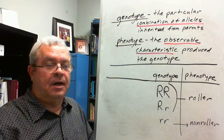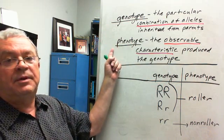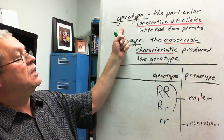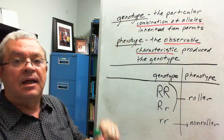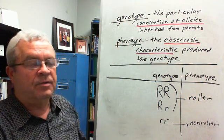Alright, let's summarize a few important points. The difference between a genotype and a phenotype. What's a genotype? We can say it's this, the particular combination of alleles inherited from parents.